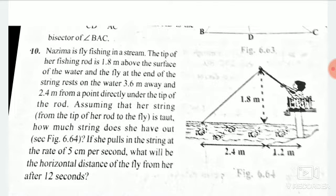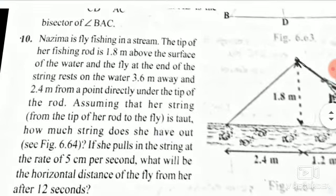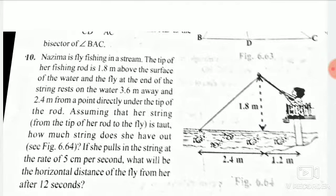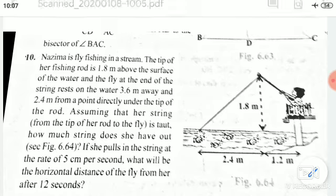Question number 10. Nazima is fly fishing in a stream. The tip of her fishing rod is 1.8 meters above the surface of water.